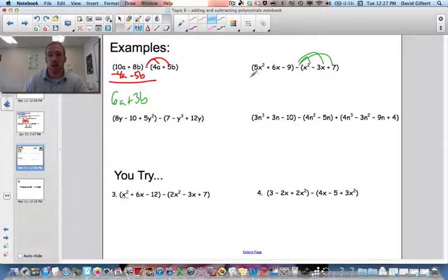Negative makes that a negative x². This is negative. This minus makes that a positive. And that makes that a negative 7. So now we get 4x² plus 9x minus 16.